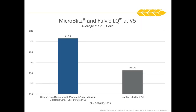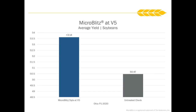Showing some research here from Ohio in 2020 — we had a starter program on both treatments. The left-hand bar did get the addition of Microblitz with a fulvic acid, and we had a 15 bushel per acre increase on corn when applied at the V5 growth stage. Showing a similar effect in beans — no starter treatments were applied to either of these, but when we applied the Microblitz at the V5 growth stage, we saw over a three bushel per acre increase in beans.